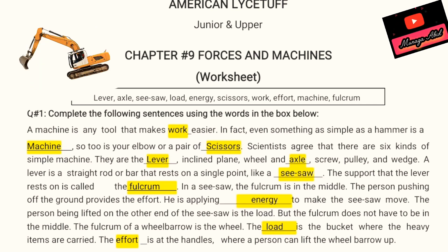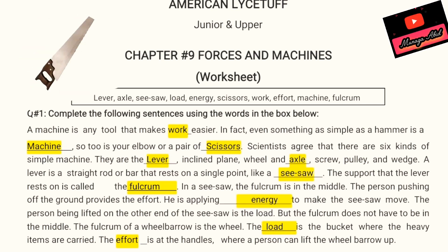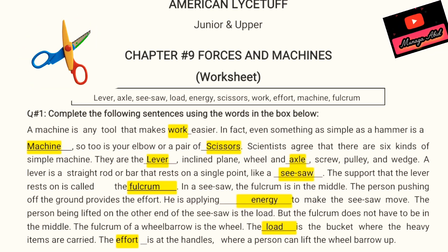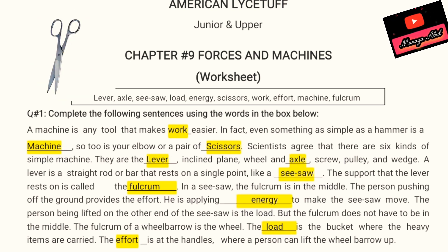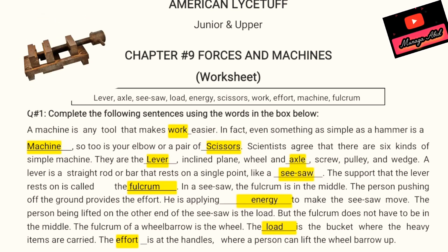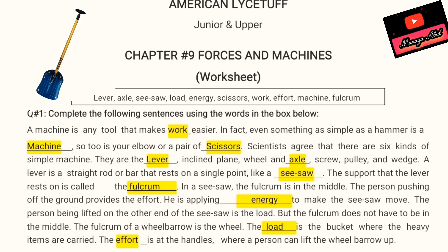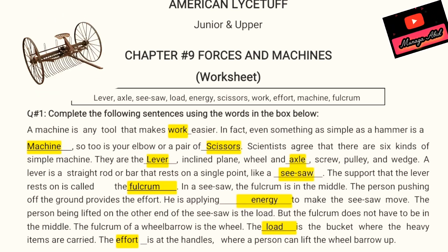A lever is a straight rod or bar that rests on a single point, like a seesaw. The support that the lever rests on is called a fulcrum. In a seesaw, the fulcrum is in the middle. The person pushing off the ground provides the effort — they are applying energy to make the seesaw move. The person being lifted on the other end is the load. But the fulcrum does not have to be in the middle.